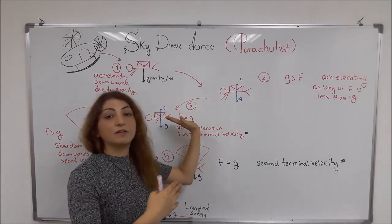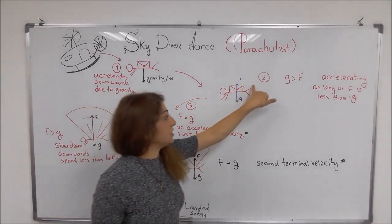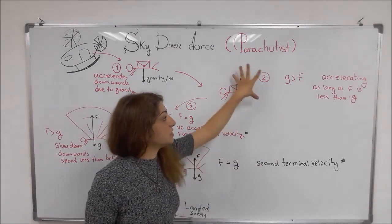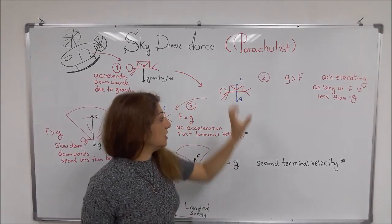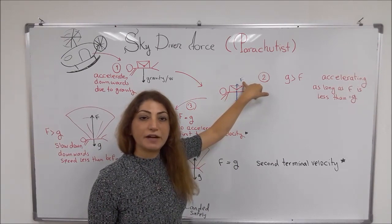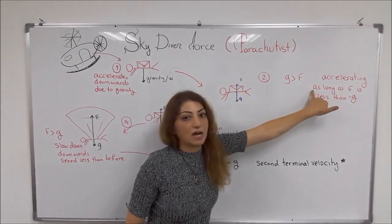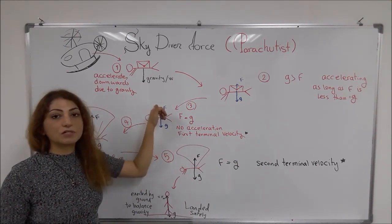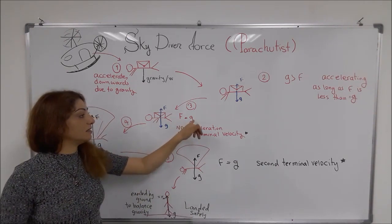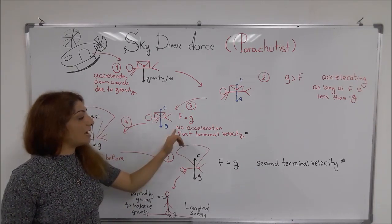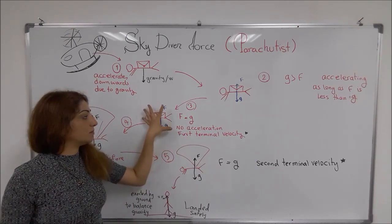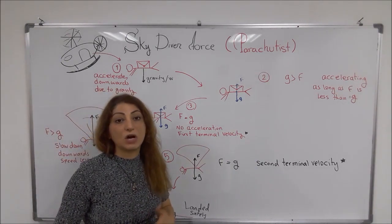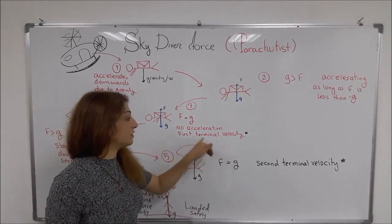The force of friction keeps increasing until they reach one position where they become equal. As long as the force of friction is less than gravity, the person is still accelerating downward. But when friction and gravity become equal in size, there is no more acceleration. Here we have the first terminal velocity — from this point onward the speed will be constant because there is no acceleration.